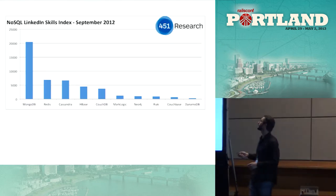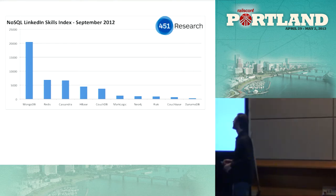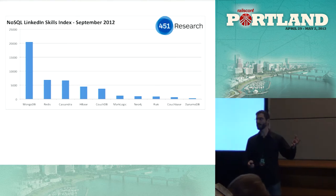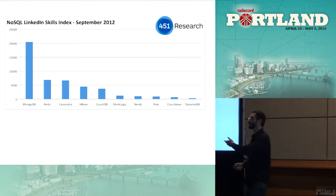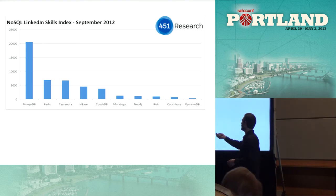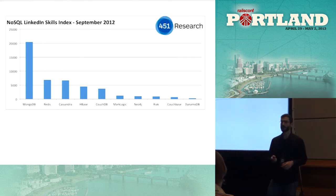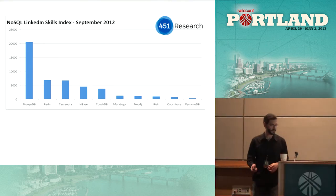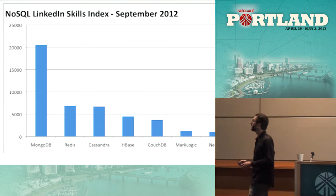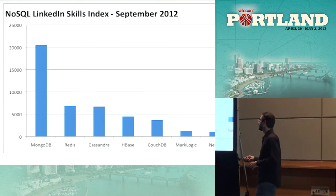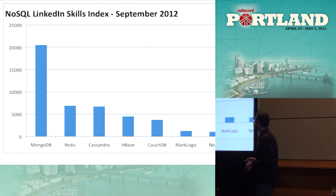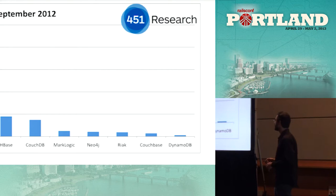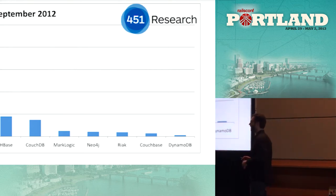This is a chart that 451 Research put out — the NoSQL LinkedIn Skills Index. People on LinkedIn have their profiles, they can say what database skills they have, and these were summed. Going from left to right, we can see the most popular NoSQL databases self-described by engineers who allegedly have skills in these databases. Taking the first half of the chart: MongoDB, Redis, Cassandra, HBase, CouchDB, MarkLogic, Neo4j, Riak, Couchbase, and DynamoDB.